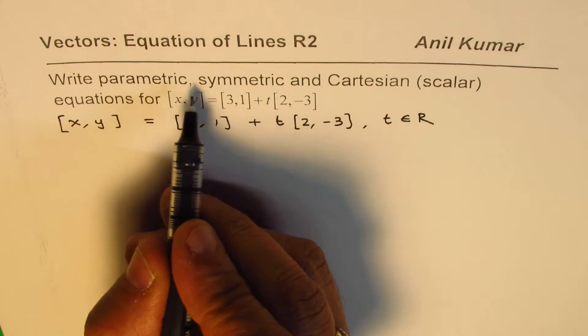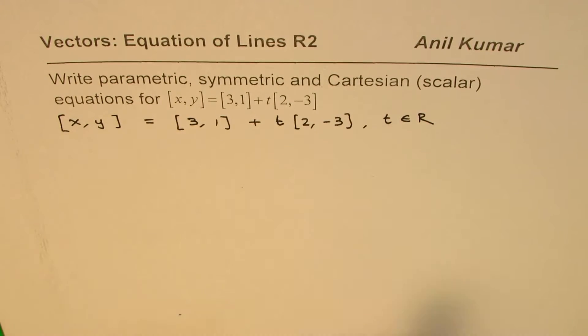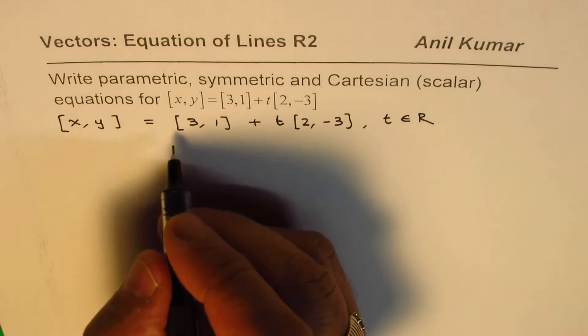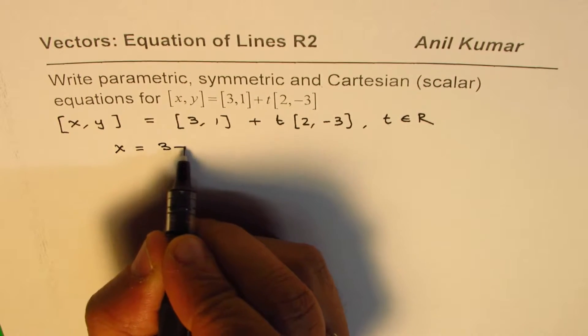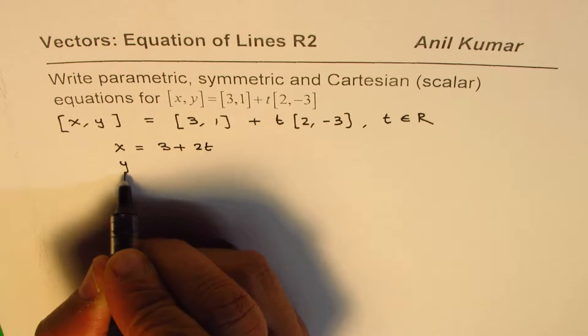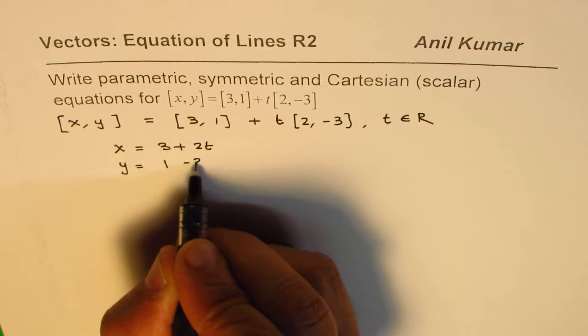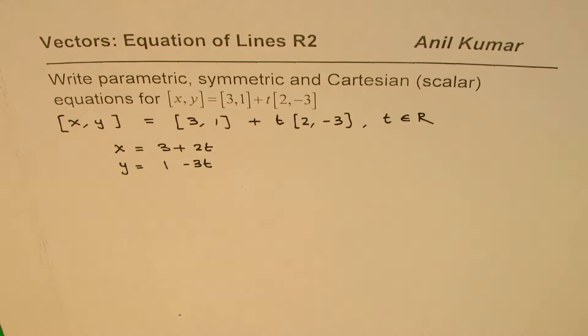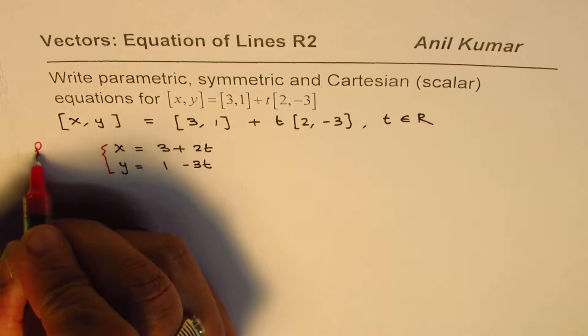To write the parametric equation, that's very simple. We can write what x is and what y is. So we could write this as x equals to 3 plus 2t and y equals to 1 minus 3t. So that becomes the parametric form of the equation. This is parametric equation.